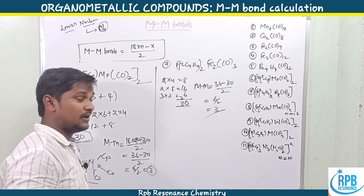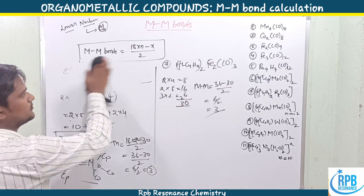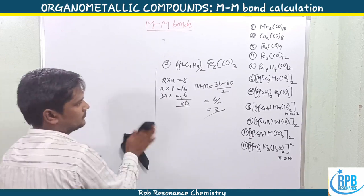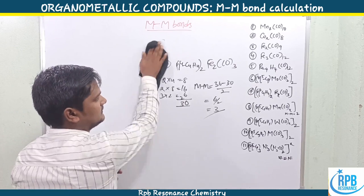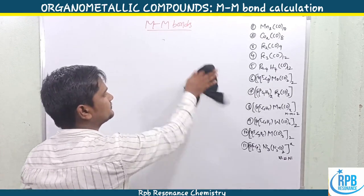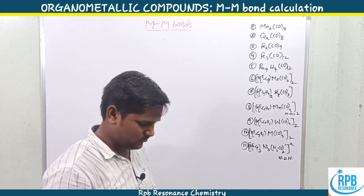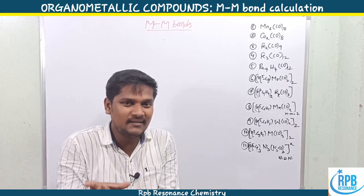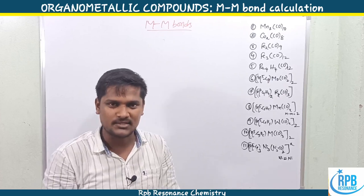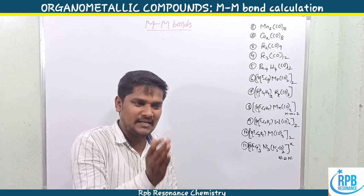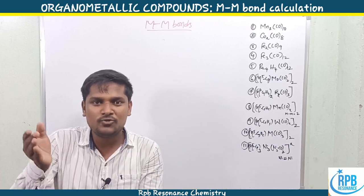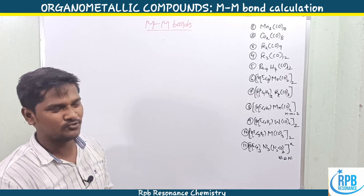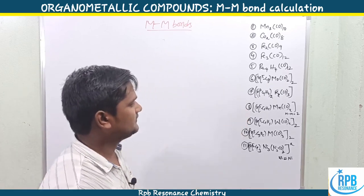Now let's move to a different type of problem. Up to now we have calculated the total number of metal-metal bonds. But in these new problems, the metal-metal bonds are given and some number of ligands or the metal atom identity is hidden. Using the metal-metal bonds formula along with the 18-electron rule, we can easily find the missing terms.